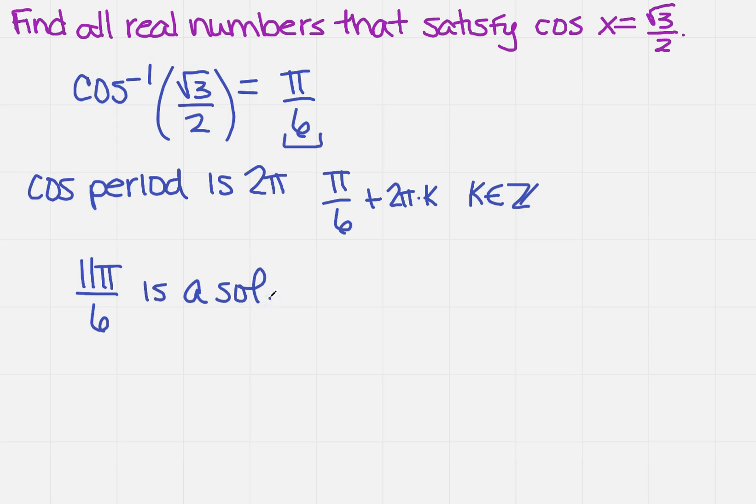So how can I write that in this same kind of format? Well, I'm going to write it as 11π/6. Again, the period is still 2π, so 2π times k, where k is an integer.